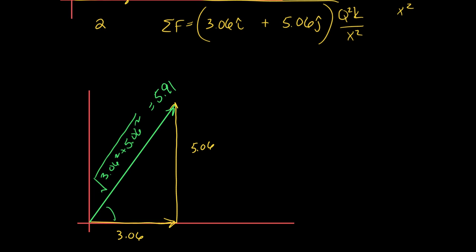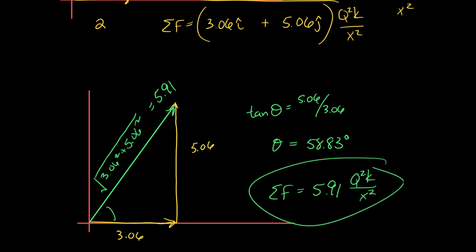I need this angle. The best way to get it? Tangent. Tangent of that angle is going to be 5.06 divided by 3.06. 58.83 degrees. So we have found the direction, 58.83 degrees from the positive i direction, and we have found the size of the force. The size of the net force is 5.91 q squared k over x squared.